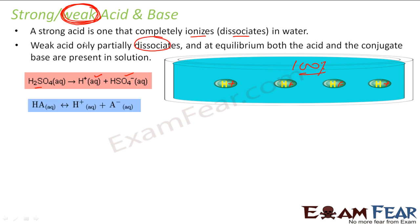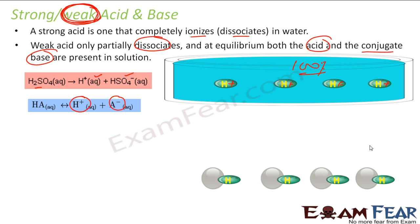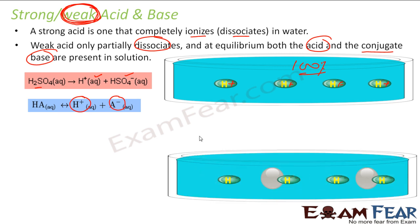Weak acids only partially dissociate and exist at equilibrium. At equilibrium, both the acid and its conjugate base are present — we will discuss conjugate base in the next few slides. For a weak acid, there is an equilibrium sign: HA gives H⁺ and A⁻, but the reverse reaction also occurs. For example, with 4 molecules of a weak acid, only 2 dissociate — about 50% ionized — while 2 remain in HA form. So weak acid ionization may be 30%, 40%, or 50% depending on the acid's strength.